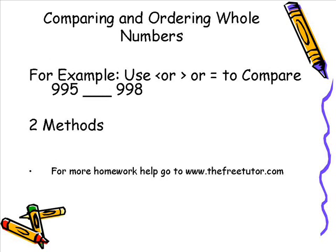Say for example we want to compare 995 with 998. Typically when we compare numbers we use the greater than or less than or equal signs to compare the numbers. There are two methods for comparing and ordering whole numbers.